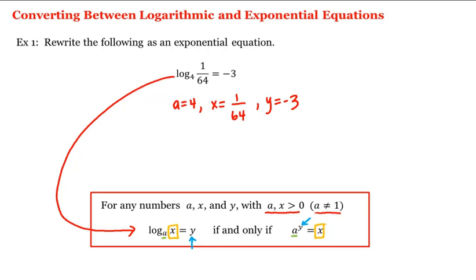And therefore, the exponential form would be a, which is 4, raised to the yth power, or the negative third power, equals x, or 1 over 64. Which would be our answer.